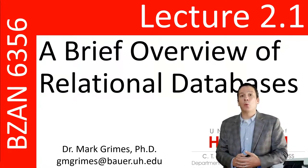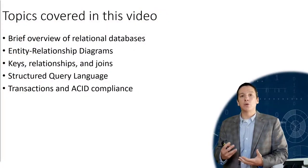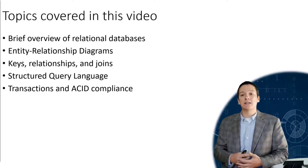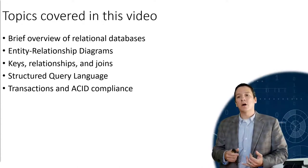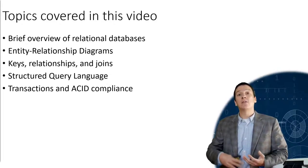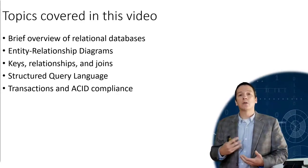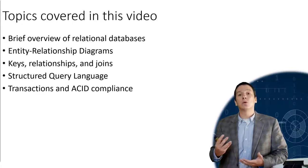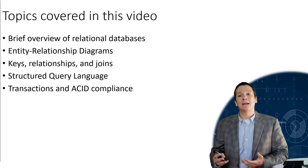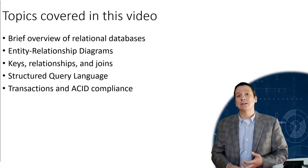Hello everyone and welcome to lecture 2.1 in our videos about relational databases. In this video we're going to give a brief overview of what relational databases are, talk about how we represent a relational schema using an entity relationship diagram, discuss structural constraints such as different types of keys, relationships and joins, then move into structured query language covering data definition language, data query language, and data manipulation language. Finally, we'll close with a discussion of how relational databases are transactional in nature and must maintain ACID compliance — that is, transactions are atomic, consistent, isolated, and durable.